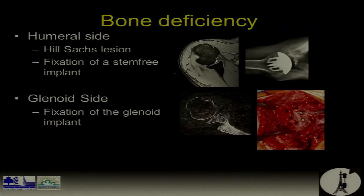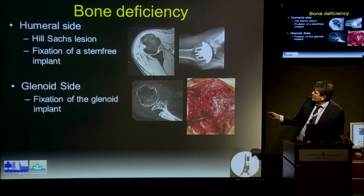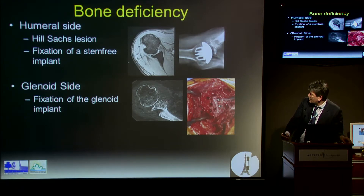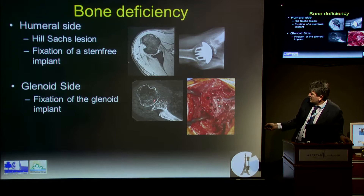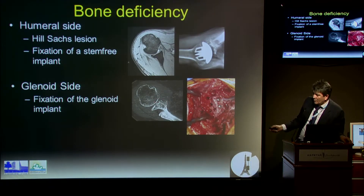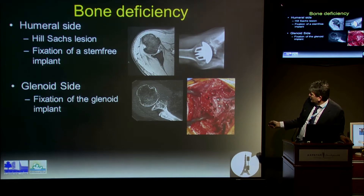You have many choices, but you have to deal first with bone deficiency. If you have big Hill-Sachs lesions, you might have problems fixing certain implants and may need a stem implant. If you have significant bone loss on the outer part of the glenoid, you have to make a bone graft before even thinking about putting an implant inside.